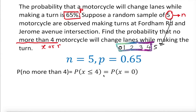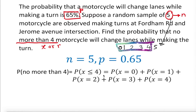So x less than or equal to four equals probability of x=0, plus probability of x=1, plus probability of x=2, plus probability of x=3, plus probability of x=4. That is how we expand 'no more than four,' including zero through four.